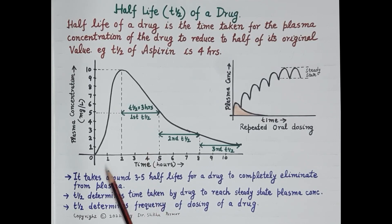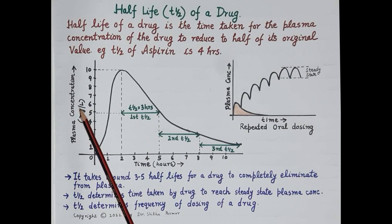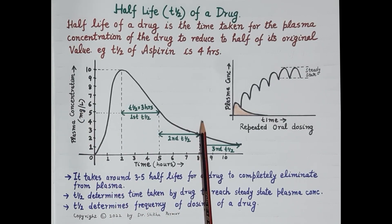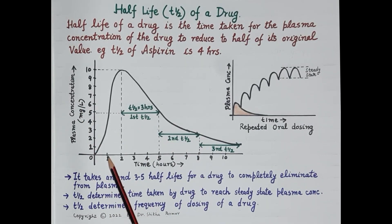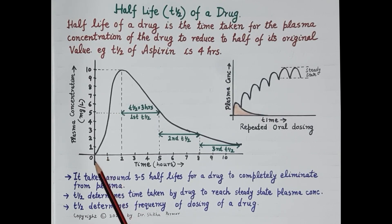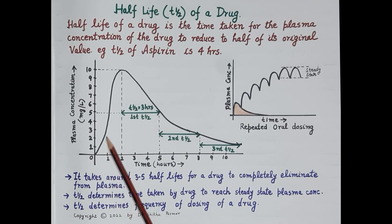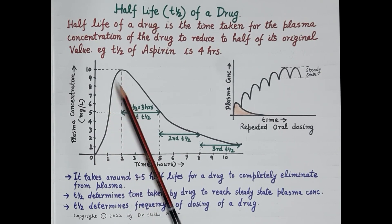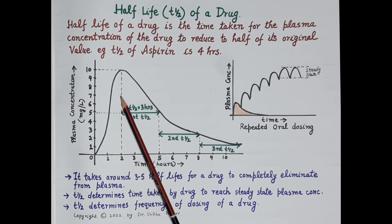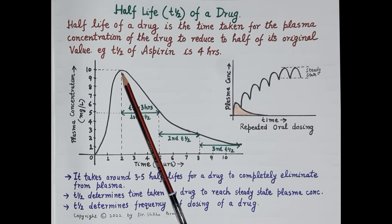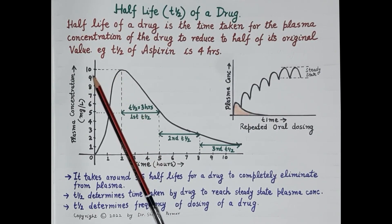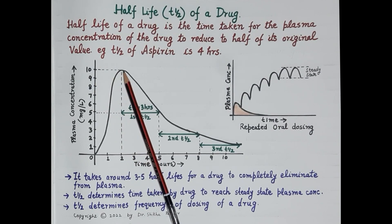Let's try to understand this concept of half-life. Look at this figure — this is the time versus plasma concentration of a drug curve. The drug is administered orally. After oral administration, the drug is absorbed into the systemic circulation, and it takes two hours for the drug to reach its maximum plasma concentration, that is 10 milligrams per liter.